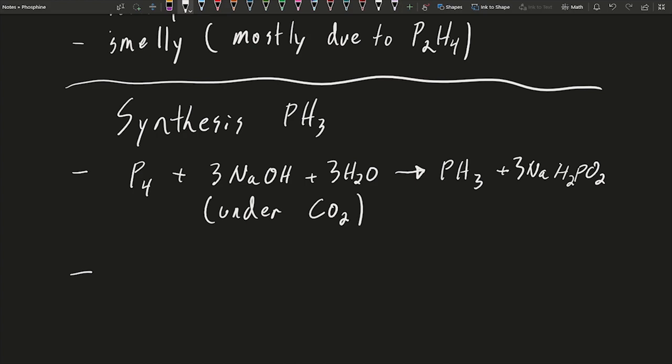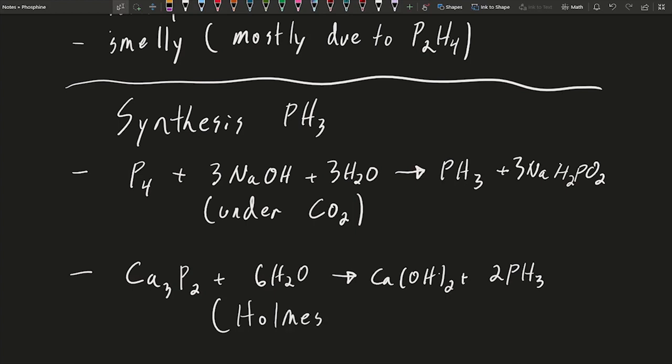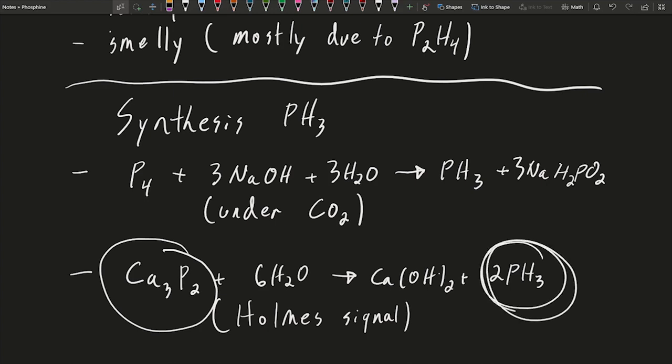Another way you might make this is calcium phosphide. This reacts to make calcium hydroxide and your phosphine here. This is actually the reaction known in the maritime world as a Holmes signal. Basically, to alert other ships you might have a problem or you're going down or not to collide with us, you have a bucket of calcium phosphide that is porous, has a hole in it. You chuck this into the ocean, you make PH3, and oxygen is around in the atmosphere. So this phosphine reacts quickly and ignites with the oxygen and sends off this bright red flame that other boats can see. That's called a Holmes signal, relying on this production of phosphine.